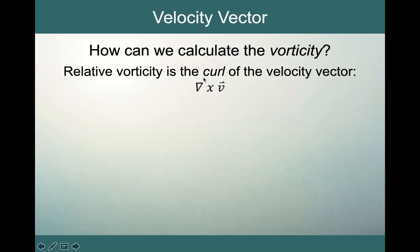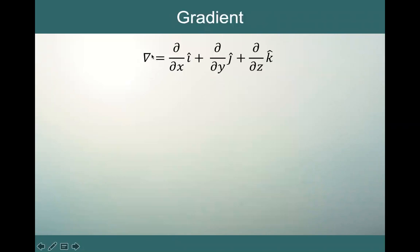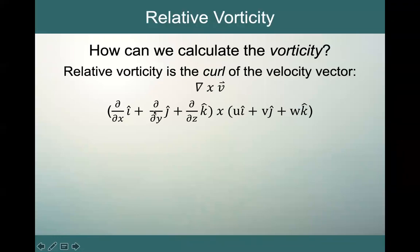Now let's look at the curl of the velocity vector — taking the cross product with the gradient. The gradient vector has components: partial derivative with respect to x, partial with respect to y, and partial with respect to z. When we take the cross product of the gradient with the velocity vector and line up all the components, we get: (∂w/∂y − ∂v/∂z) î + (∂u/∂z − ∂w/∂x) ĵ + (∂v/∂x − ∂u/∂y) k̂.